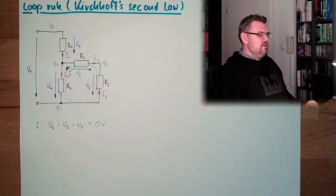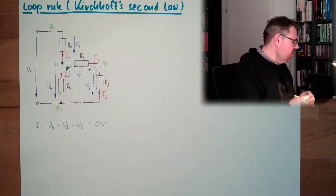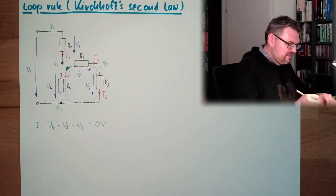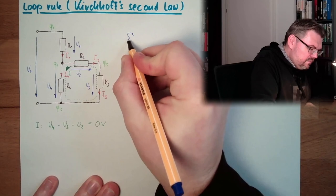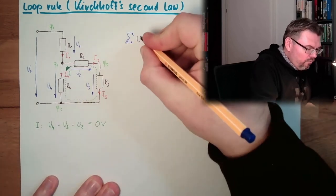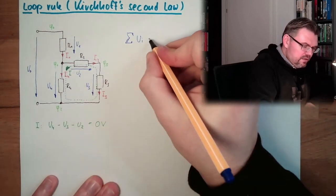The loop rule of Kirchhoff says the sum of all voltages in a closed loop is zero volts. That's the loop rule.